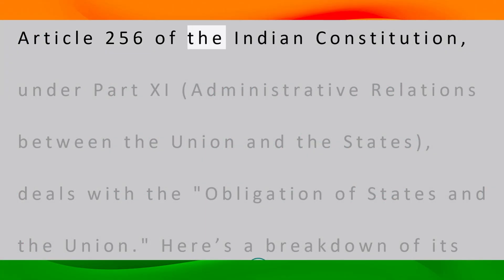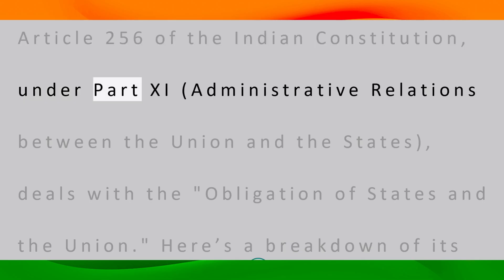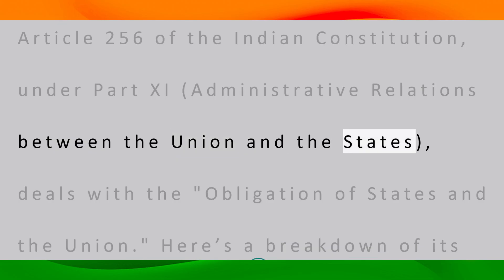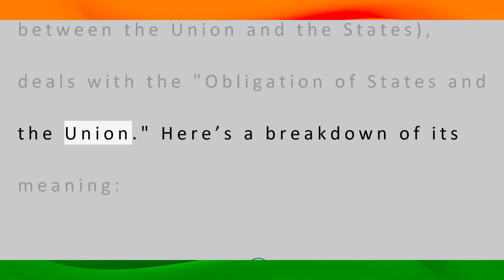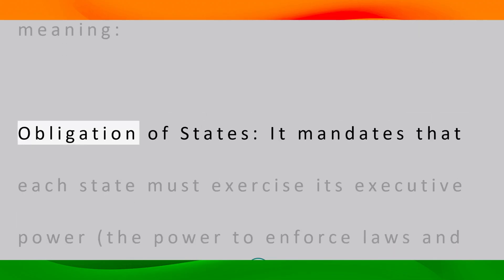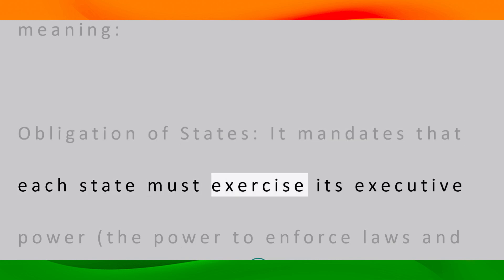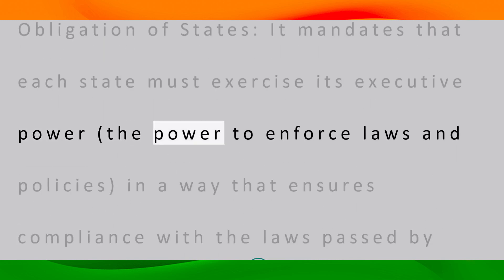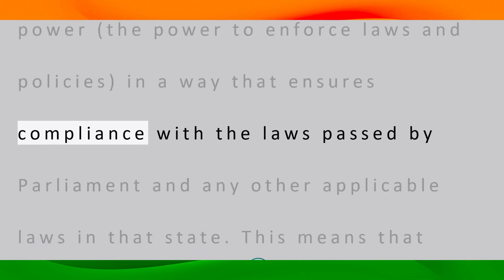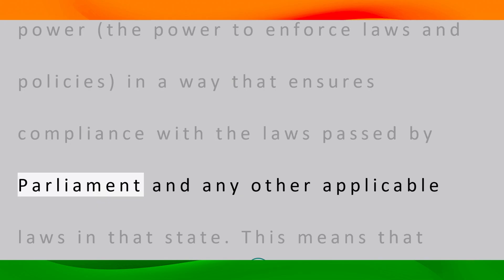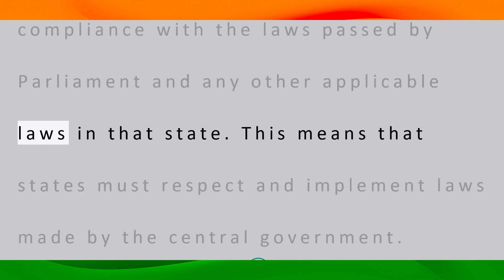Article 256 of the Indian Constitution, under Part 11 — administrative relations between the union and the states — deals with the obligation of states and the union. It mandates that each state must exercise its executive power, the power to enforce laws and policies, in a way that ensures compliance with the laws passed by parliament and any other applicable laws in that state.